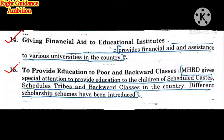The fourteenth point is giving financial aid to educational institutes, providing financial assistance to various universities across India so they can implement education policies. The fifteenth point is to provide education to poor and backward classes. MHRD gives special attention to the children of Scheduled Castes, Scheduled Tribes, and backward classes, with scholarship programs and reservations specifically for them to ensure equal education and development.